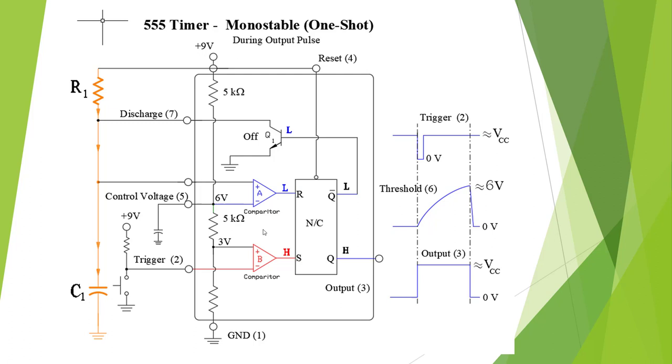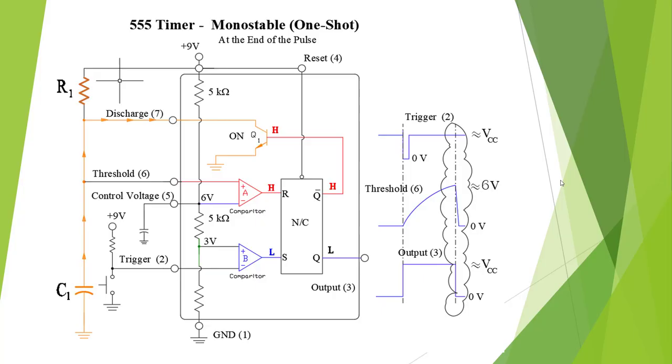It is going to change the position of these comparators and flip this latch in order to reset. So based on these two sizes, we trigger it. And it is going to make a time pulse based on that RC circuit, based on the charge pattern of our capacitor.